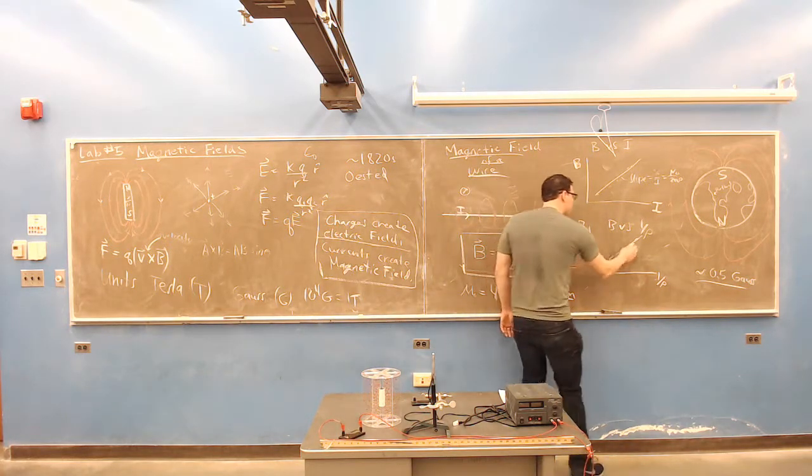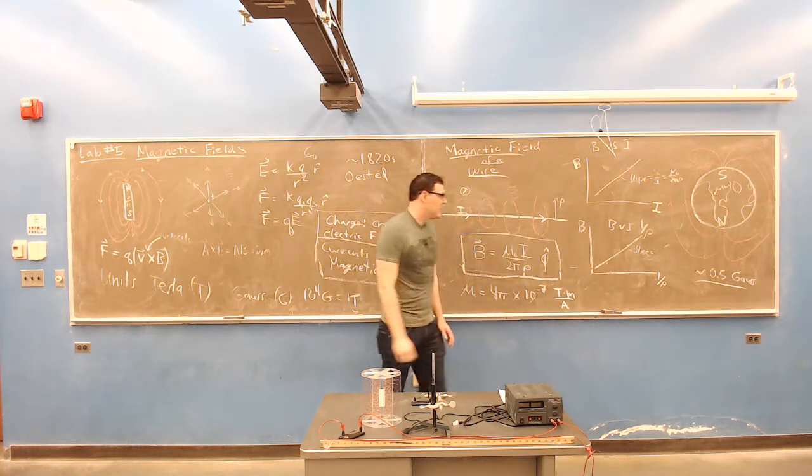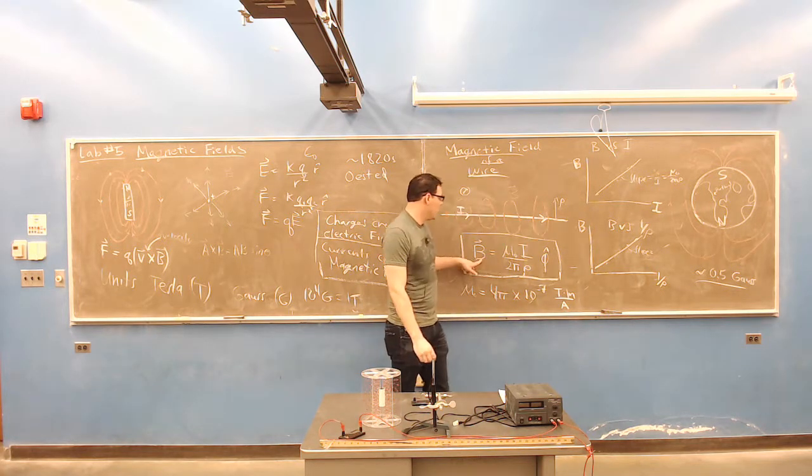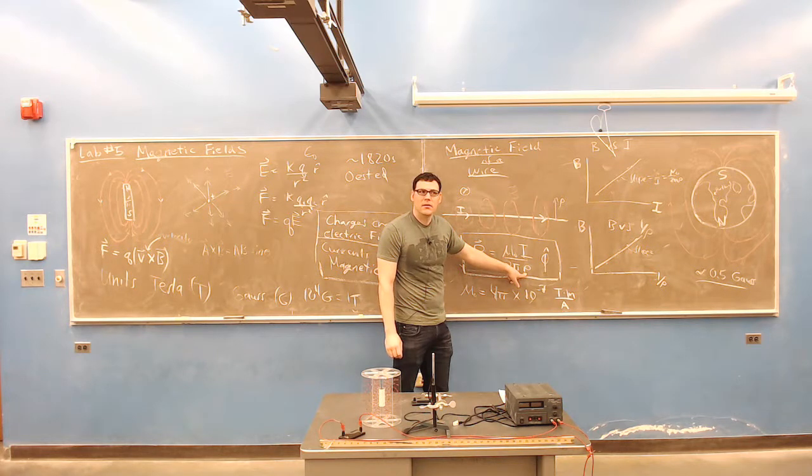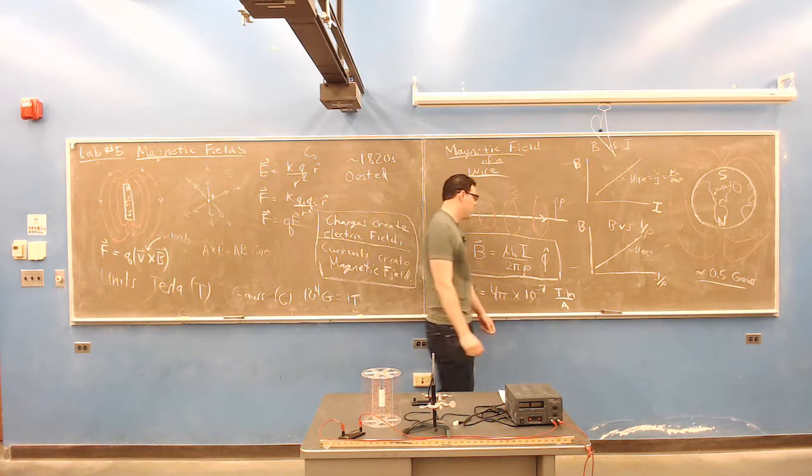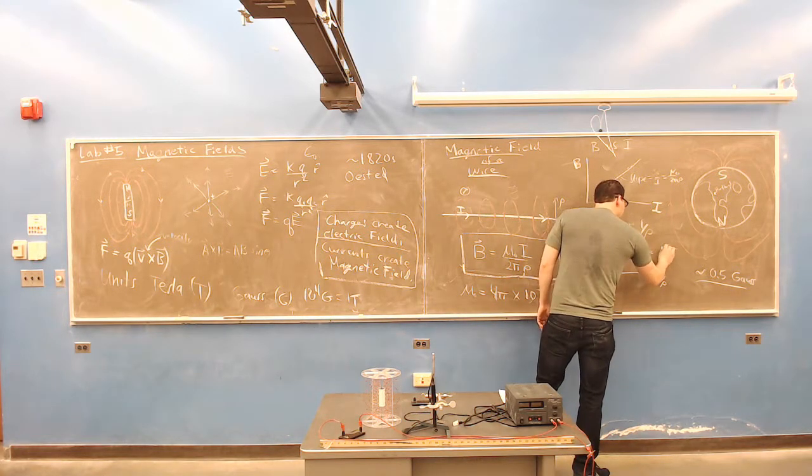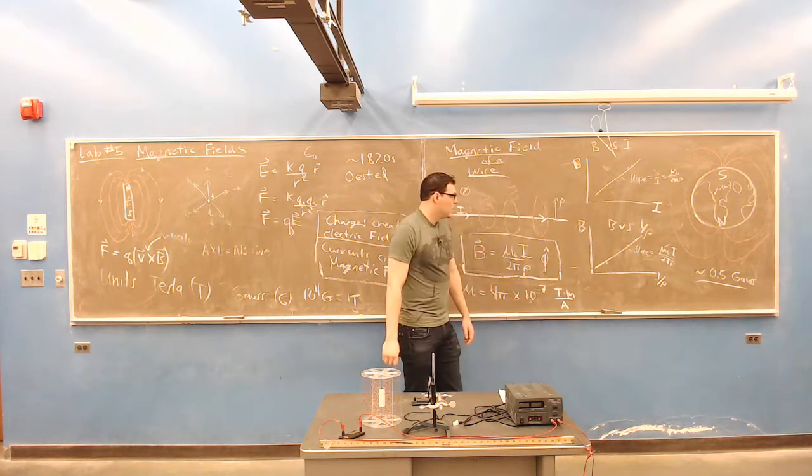All right. Everyone see it? And this one, the slope is? So I'm doing B, which is my Y coordinate, and 1 over rho as my X coordinate. So what's the slope? Everything that's left over, right? Mu naught I over 2 pi.